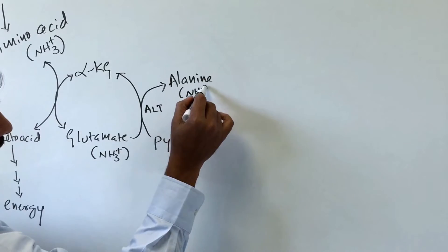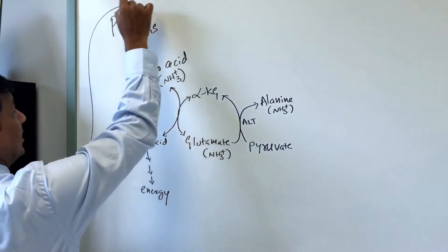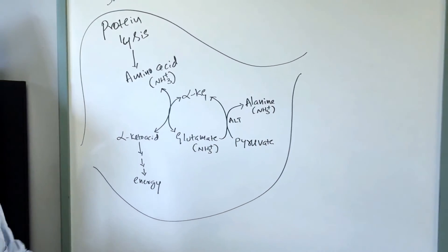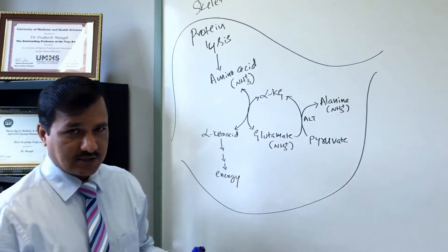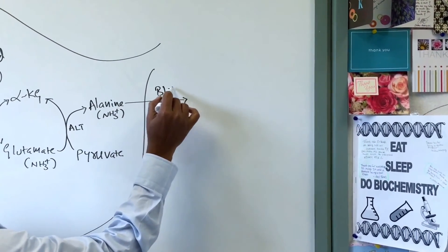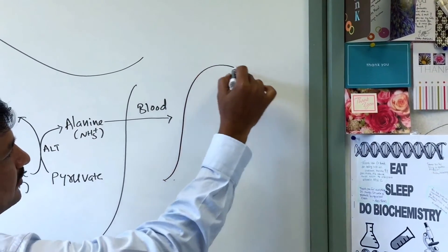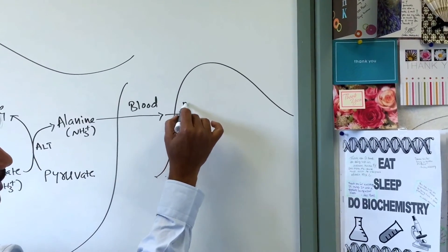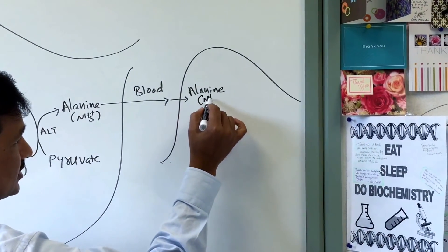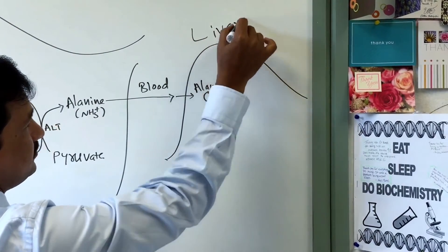The amino group is now in alanine, all within the skeletal muscle. Alanine is secreted from the skeletal muscle into the blood, and from the blood it is taken up by the liver. The amino nitrogen is now carried in alanine present in the liver.